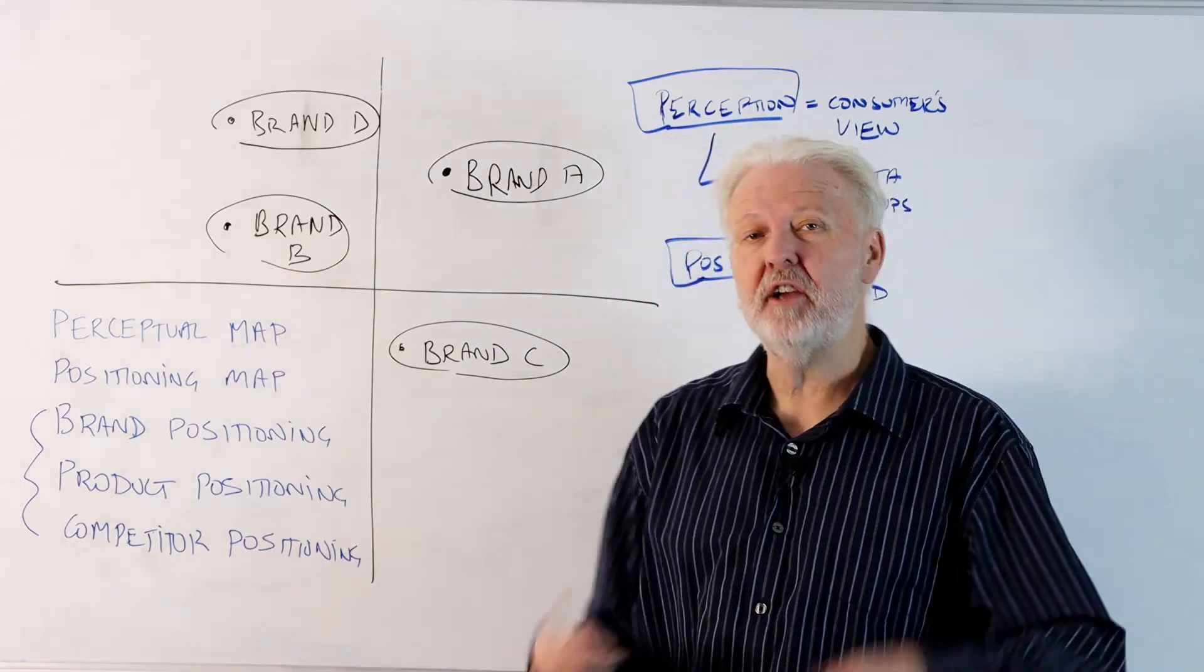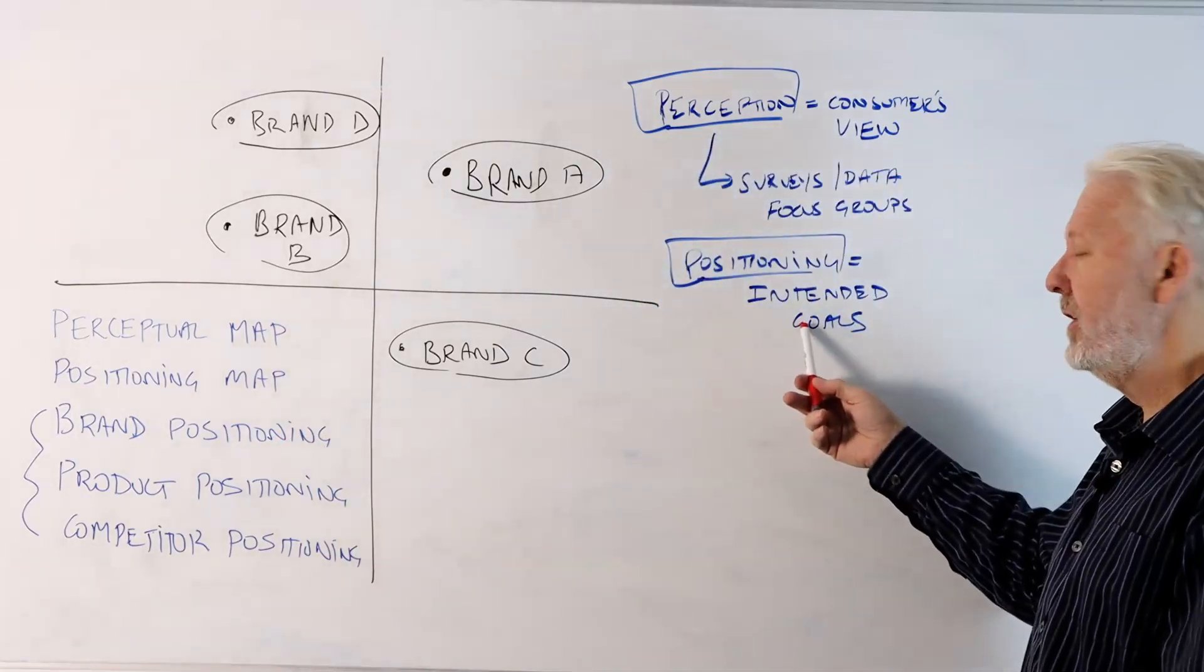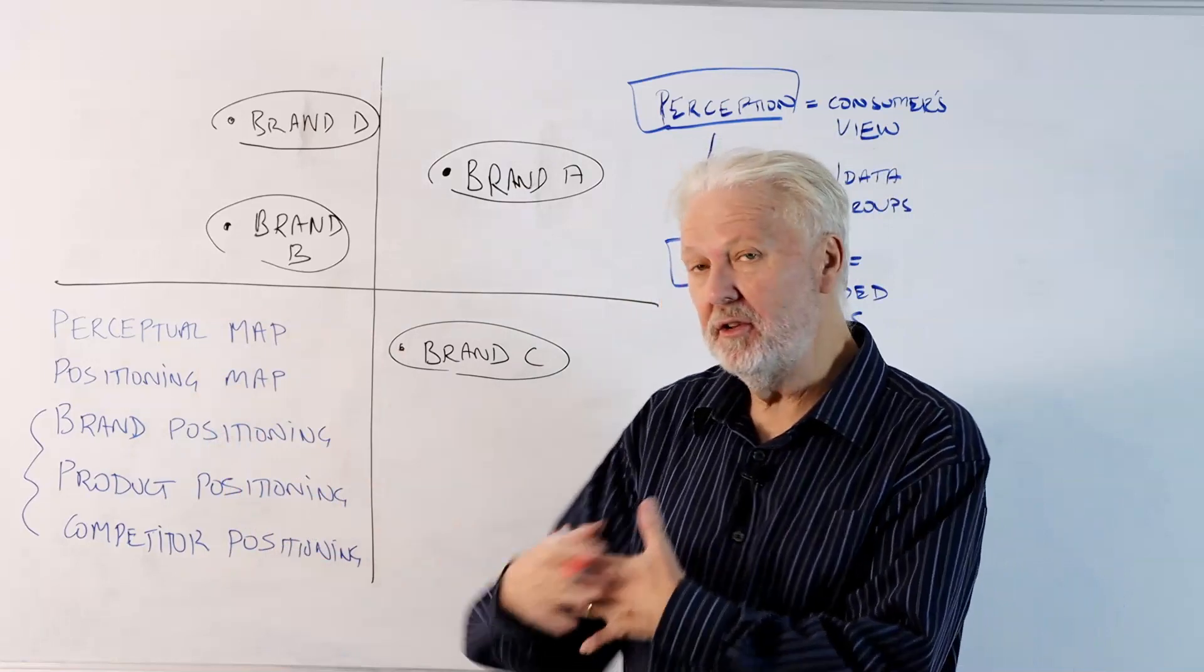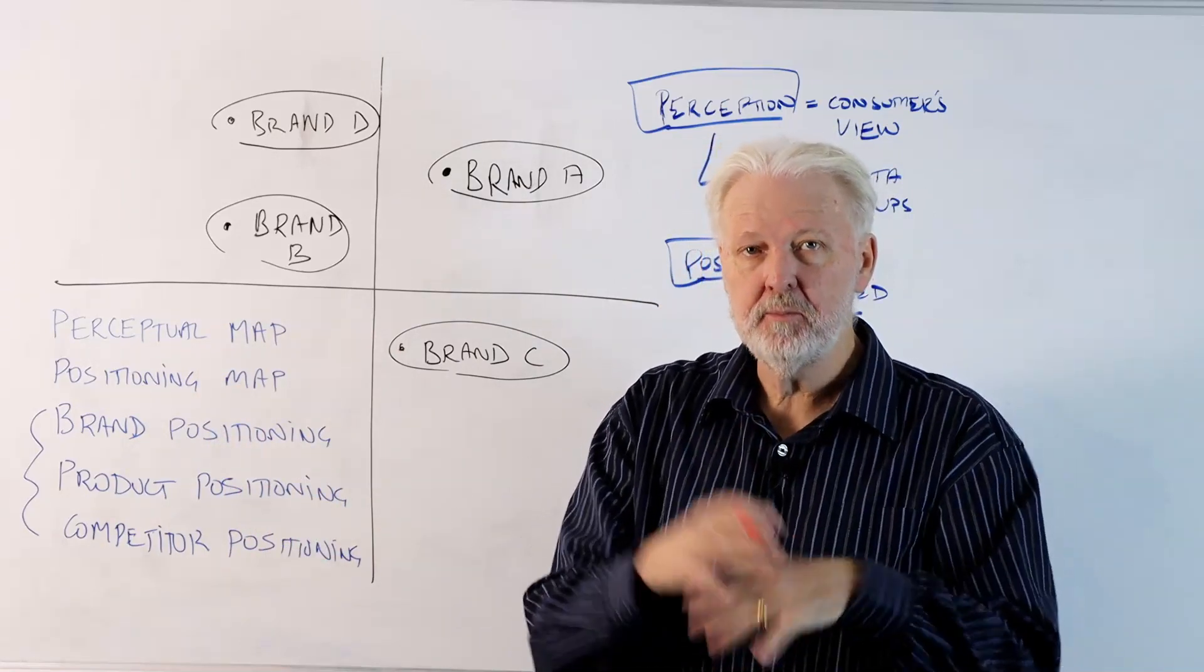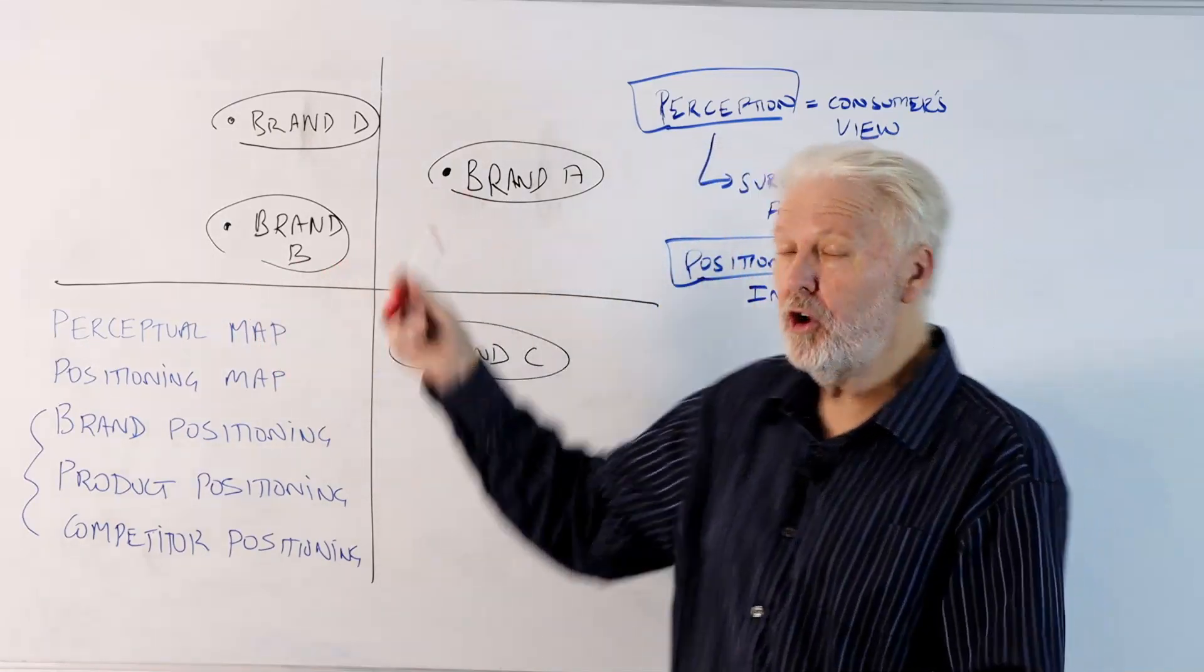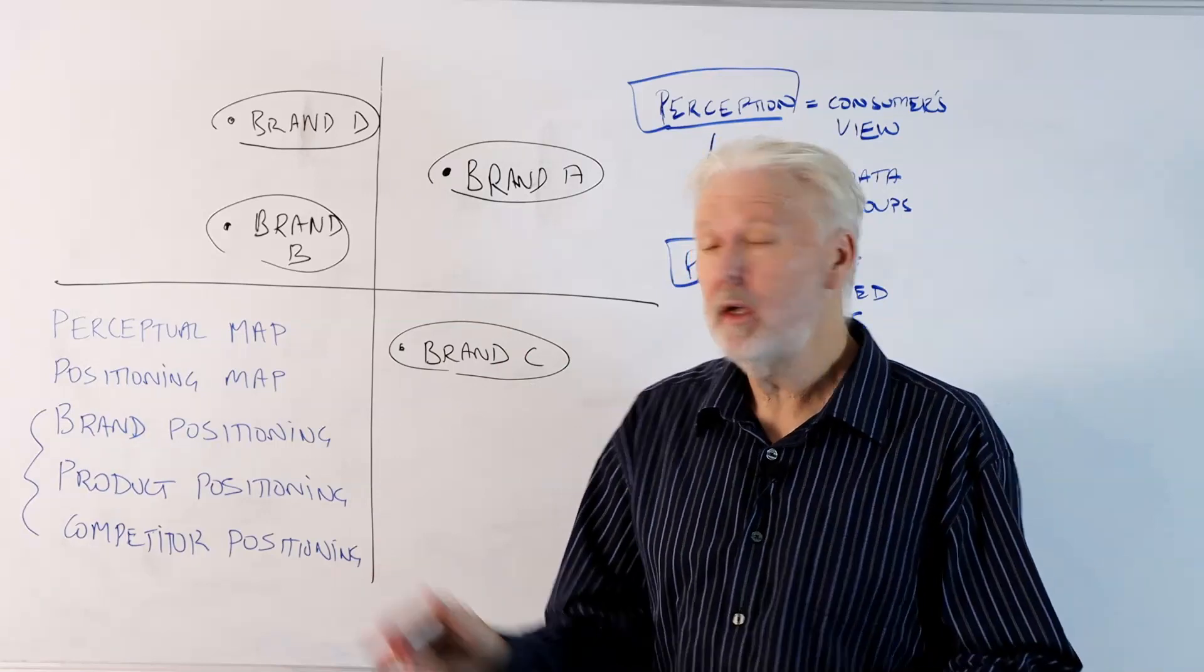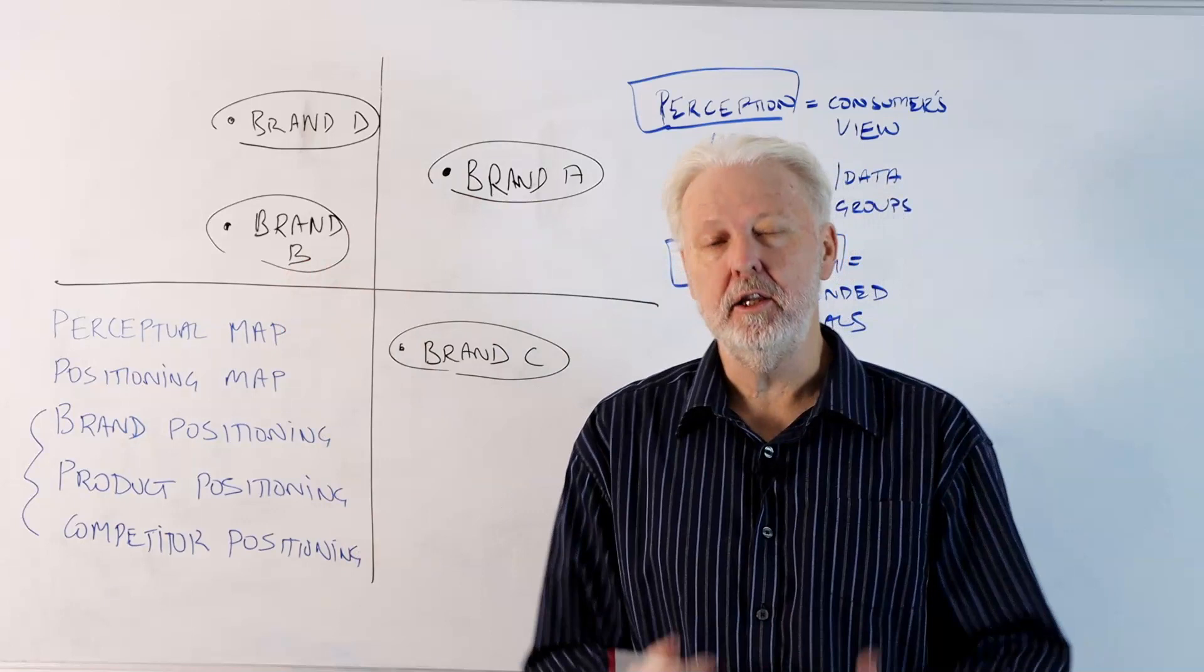Now our positioning map is a strategic approach. Positioning is our intended goals, how we want to be positioned in the marketplace. We might have a basis or starting point with our consumer perception, but we're brand B and we want to move over to here. So we would construct a positioning map of how we would like the market to be mapped and how we want to reposition or improve our positioning in the marketplace.